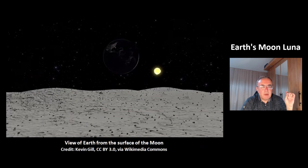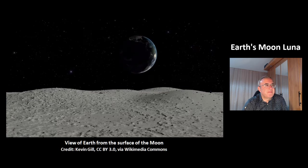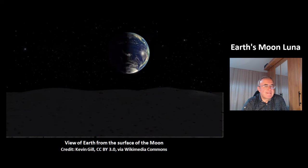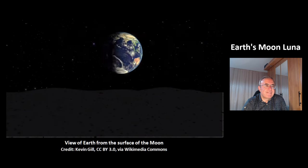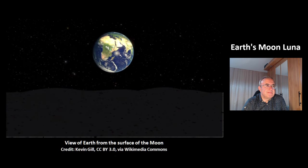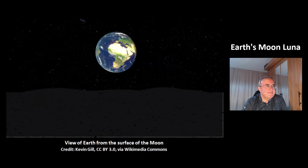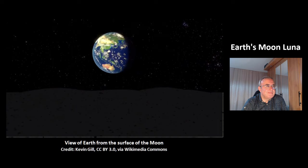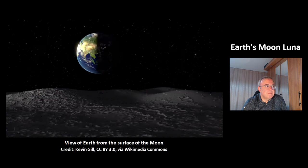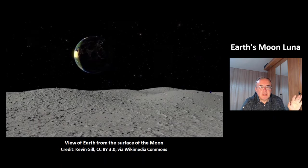This is how Earth would look like if you looked at it from the surface of the Moon — slowly disappearing in the shadow of the Moon.